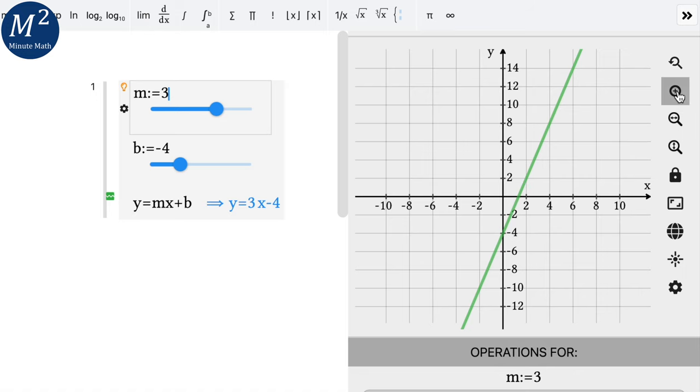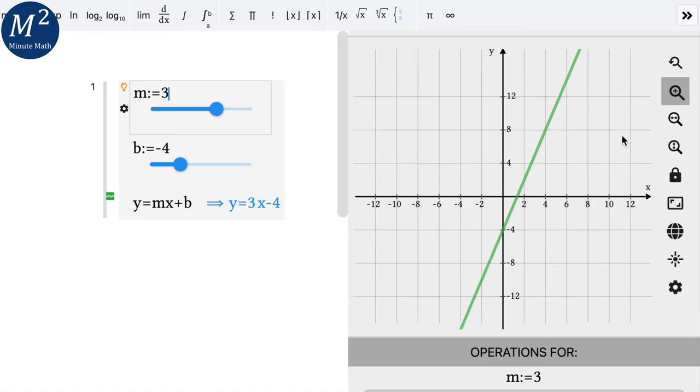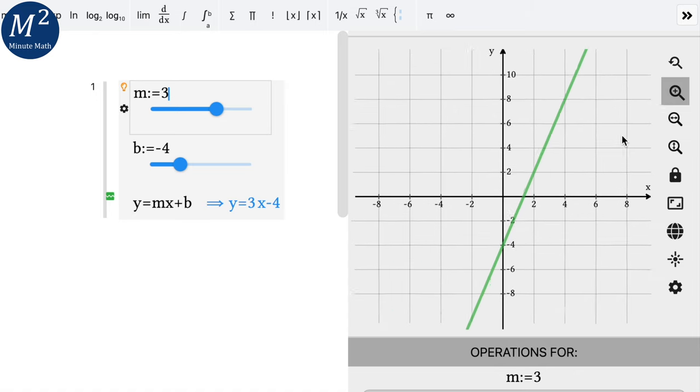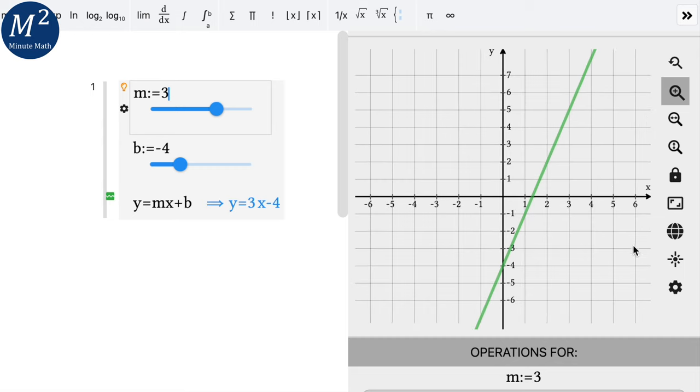We can zoom in on our graph if we want. Right here we can, let me see, there we go, using my scroll wheel on my mouse. And we can see a little closer now. So we have a slope, that might be easier to see. There we go.